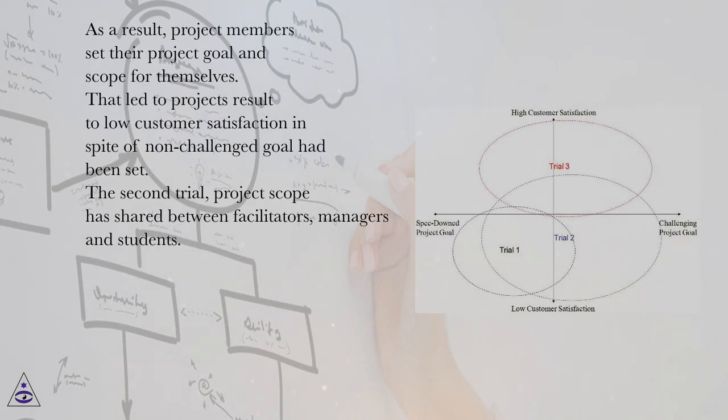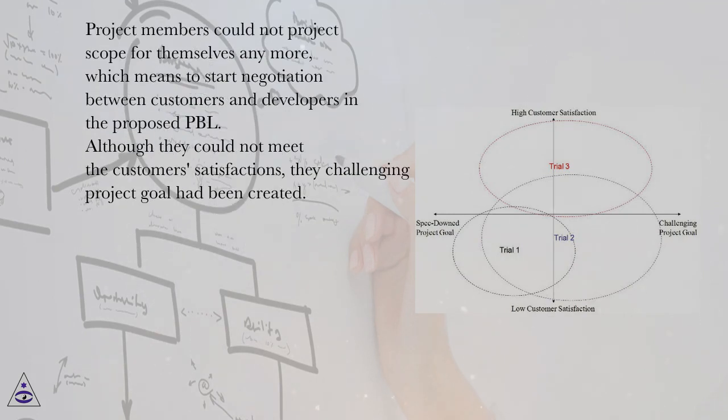The second trial, project scope has shared between facilitators, managers and students. Project members could not project scope for themselves anymore, which means to start negotiation between customers and developers in the proposed PBL. Although they could not meet the customer satisfactions, the challenging project goal had been created.